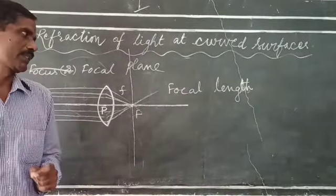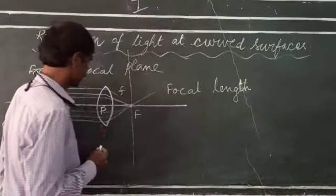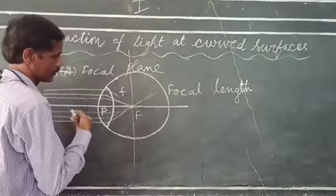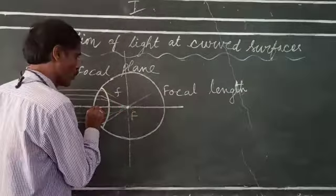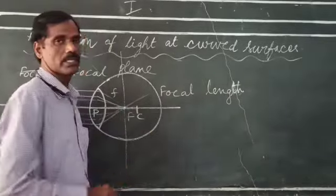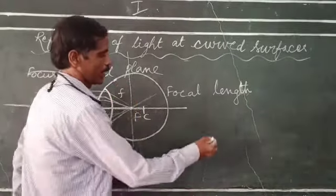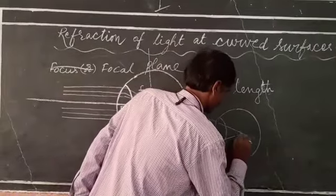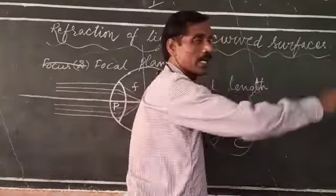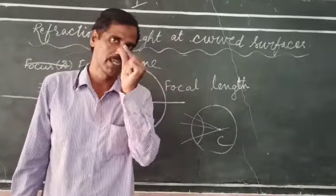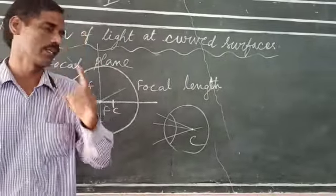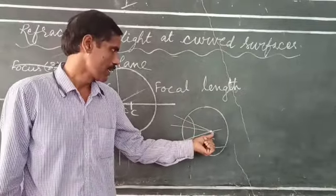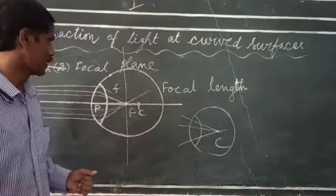Now we are going to define radius of curvature. Radius of curvature is the radius of the sphere of which the lens surface is a part. The distance between the center of curvature and the pole is known as the radius of curvature. Any normal drawn to a lens always intersects at one point, and that point is defined as the center of curvature.